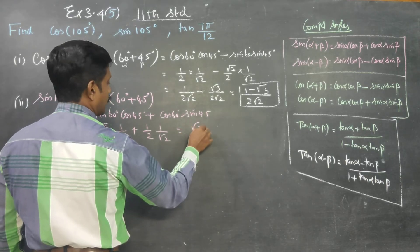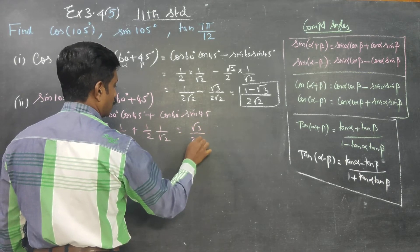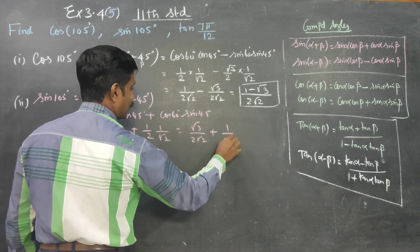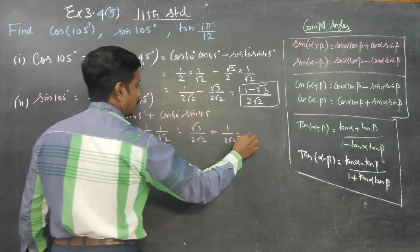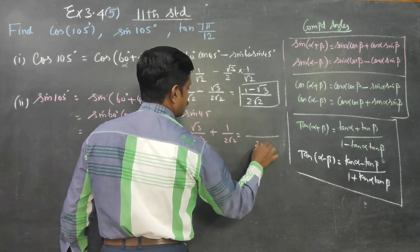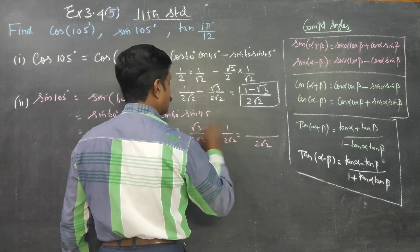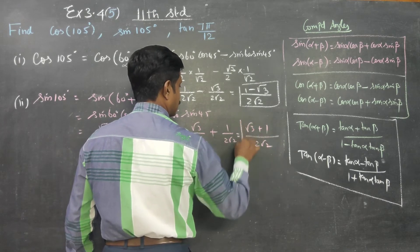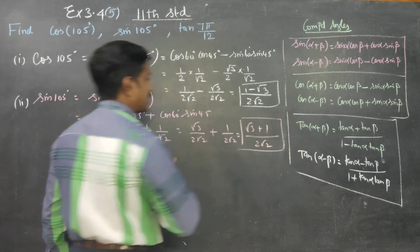That gives us √3/(2√2) plus 1/(2√2). Taking LCM of 2√2, the answer is (√3 + 1)/(2√2). This is the second answer, sin 105°.